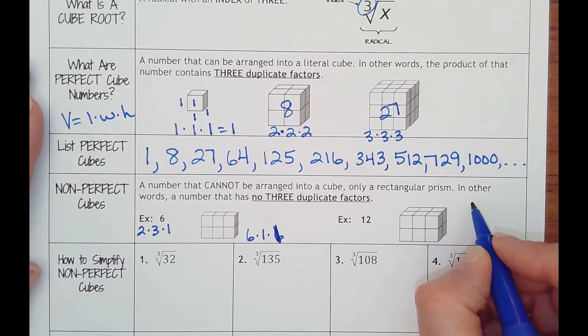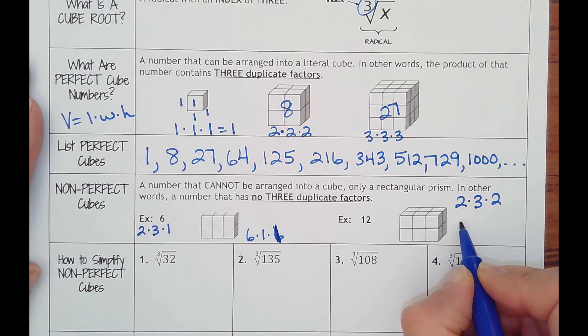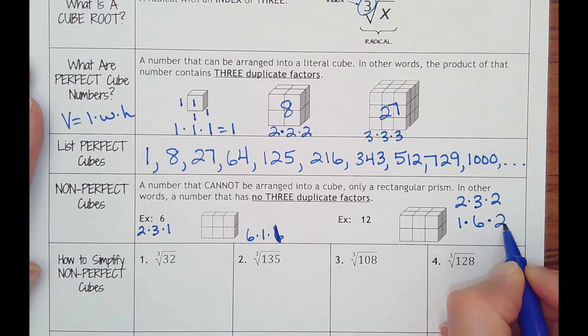Twelve. Think of how you multiply to make twelve. Two times three is six, times two is twelve. Or you could do one times six which is six, times two is twelve. There's going to be no way to arrange it into a cube.